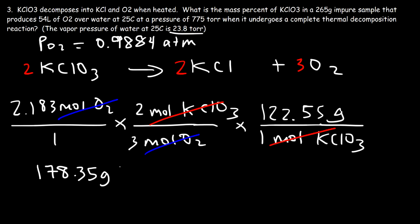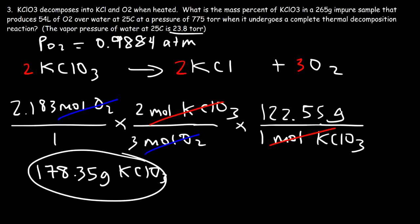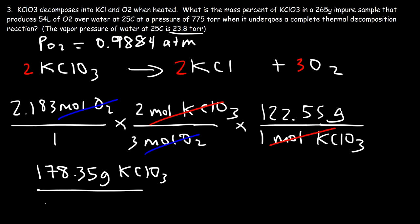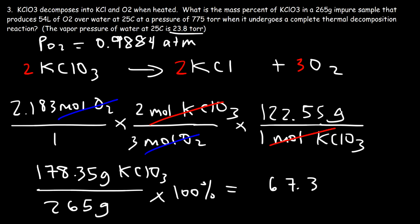That's the mass of KClO3 consumed in the reaction. Since all KClO3 in the impure sample reacted, we divide 178.35 grams by the total mass of the impure sample (265 grams) and multiply by 100%. This gives a final answer of 67.3% — the mass percent of KClO3 in the impure sample.